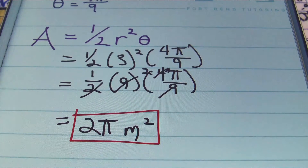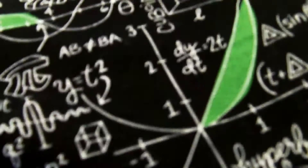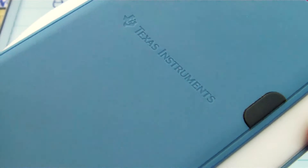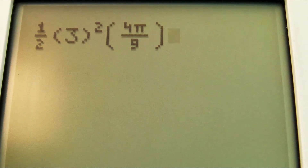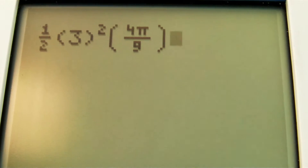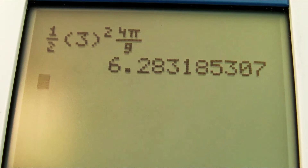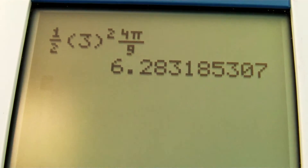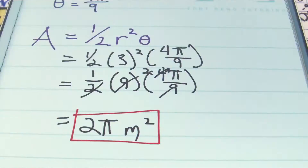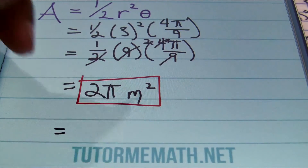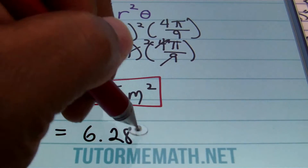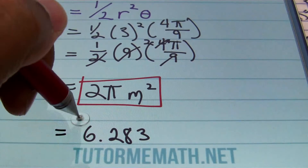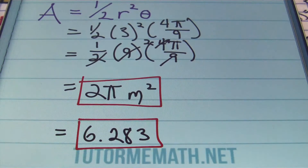If you need your answer in decimal notation, grab your calculator. I'll plug in this result — 2π — and press enter. This gives a result of 6.283 rounded to the nearest thousandths place. Our answer rounded to the nearest thousandths place is 6.283. Let's go ahead and box that up as well. That's part number one.